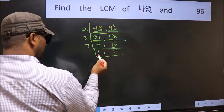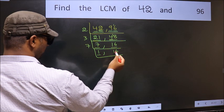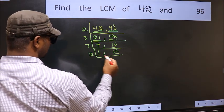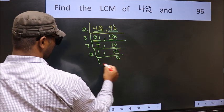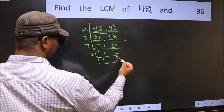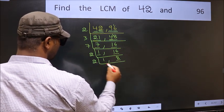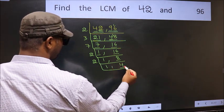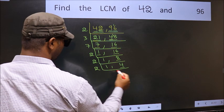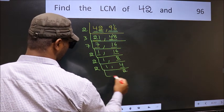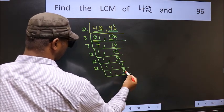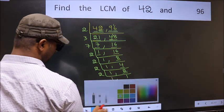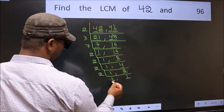Now we got 1 here, so focus on the next number 16. 16 is 2 eights, 16. Now we have 8: 8 is 2 fours, 8. Now we have 4: 4 is 2 twos, 4. Now we have 2 — 2 is a prime number, so 2 ones are 2. We got 1 in both places.